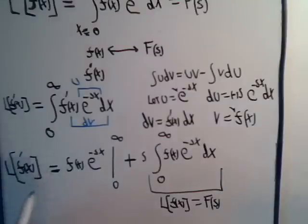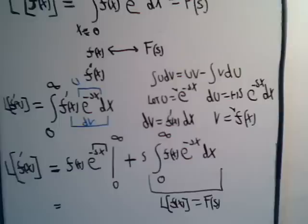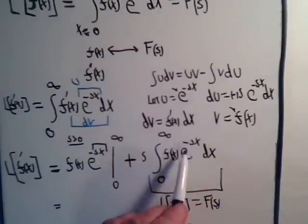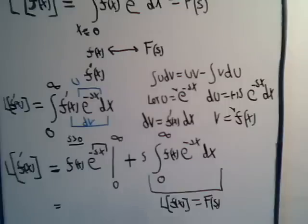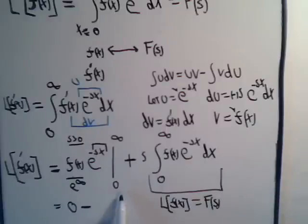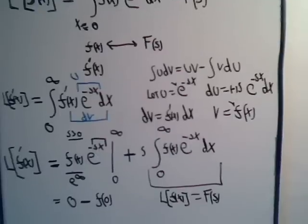Now let's go over here. If this part of the exponent is positive, then we put infinity in, and that will be e to the minus infinity. So s has to be greater than zero — that's what we said in our first video introduction to the Laplace Transform, so we're being consistent. This is equal to then: e to the minus infinity goes to zero in the denominator. Minus putting zero in for x — that's e to the zero, which is one — times f of zero.